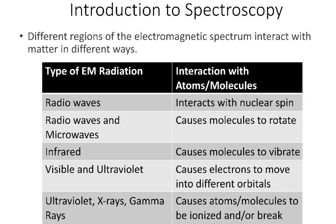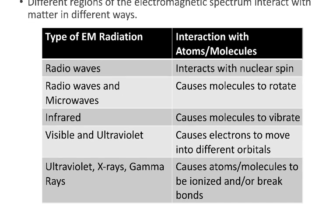The different types of electromagnetic radiation interact with matter in fundamentally different ways. Radio waves interact with the nuclear spin — that's why they're used in NMR spectroscopy. Microwaves and radio waves also cause molecules to rotate faster when absorbed. In infrared spectroscopy, we actually cause the molecules to vibrate faster. In visible and ultraviolet spectroscopy, we're causing electrons to move into different orbitals. And at higher energies — ultraviolet, X-rays, and gamma rays — we can ionize atoms and molecules, ripping off electrons or even breaking chemical bonds.